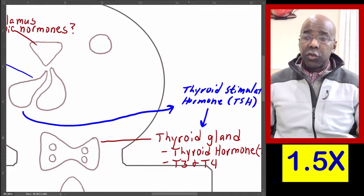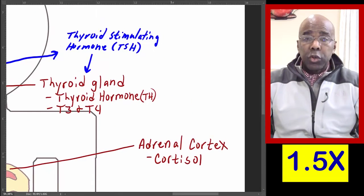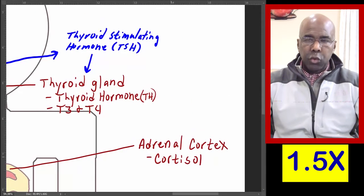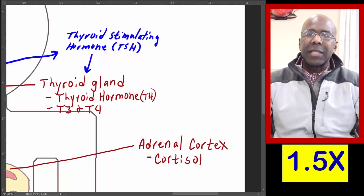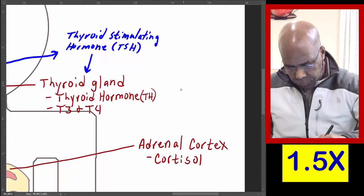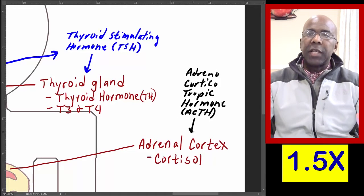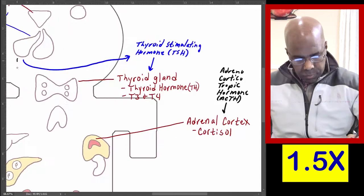Let's look next at the adrenal gland. The adrenal cortex produces cortisol. However, the adrenal cortex cannot produce cortisol of its own accord. It is stimulated by another hormone, and that hormone is adrenocorticotropic hormone, ACTH. Adrenocorticotropic hormone is secreted by the anterior pituitary.